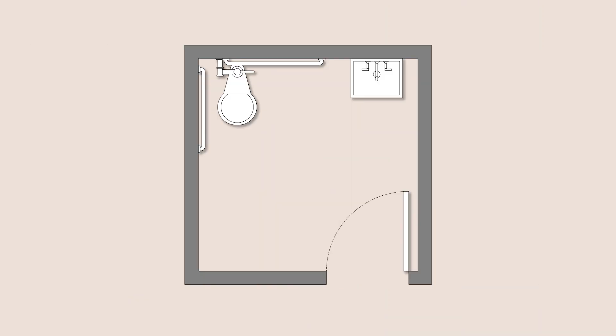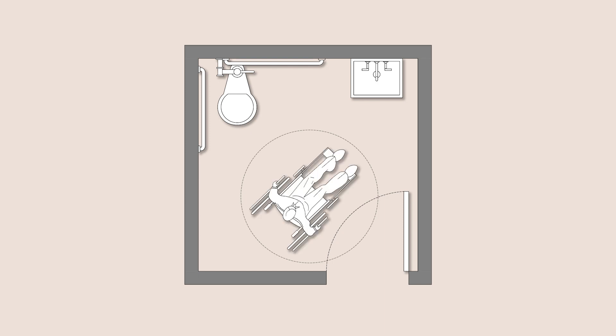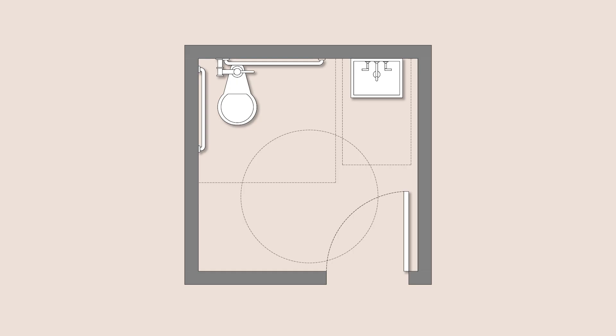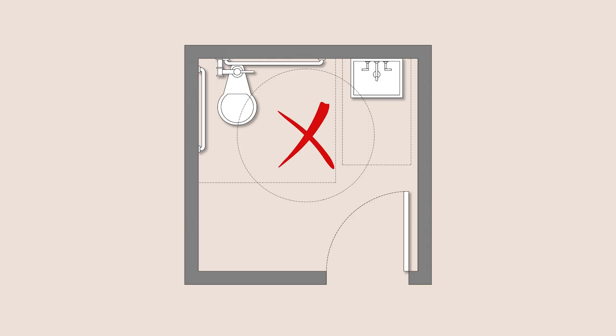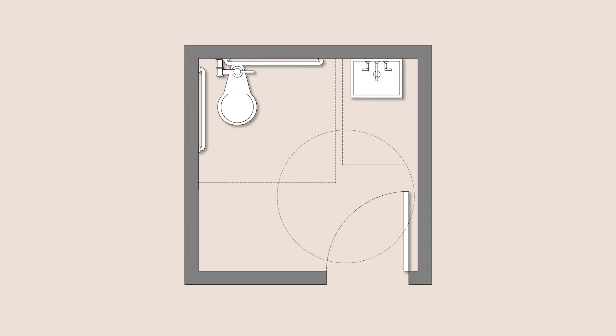Our next standard guideline is the 60-inch turning radius, which is equivalent to five feet. 60 inches is the turning radius of a wheelchair, so this 60-inch circle allows a wheelchair to turn a complete 360 degrees without obstruction. This radius can overlap with the clearances of the door swing and bathroom fixtures, but it cannot interfere with any fixtures themselves or the actual door when it's in a 90-degree open position.